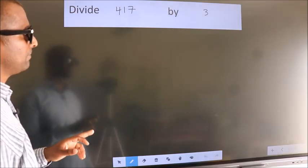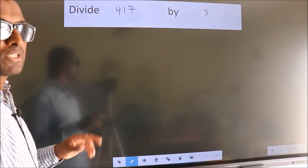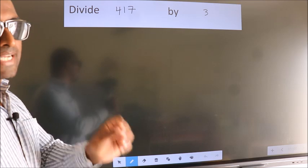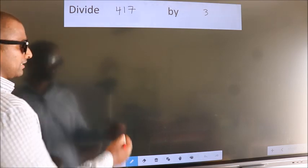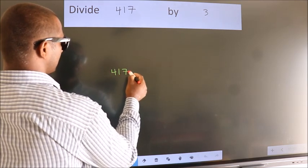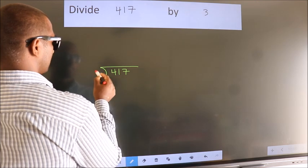Divide 417 by 3. To do this division we should frame it in this way. 417 here, 3 here.